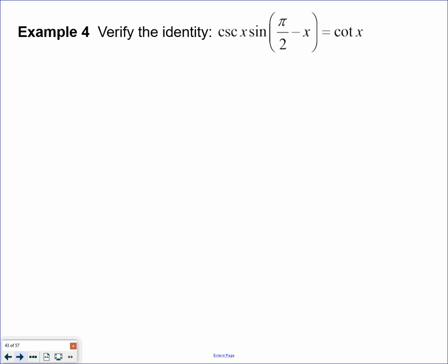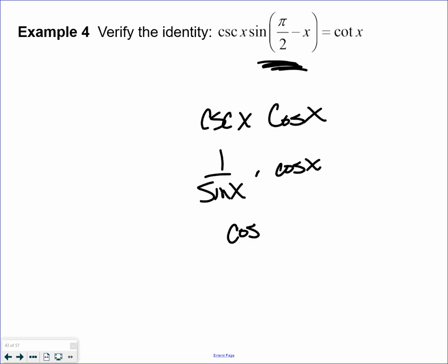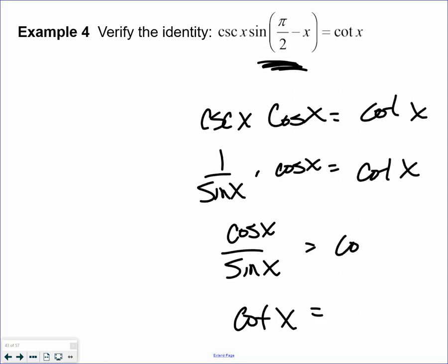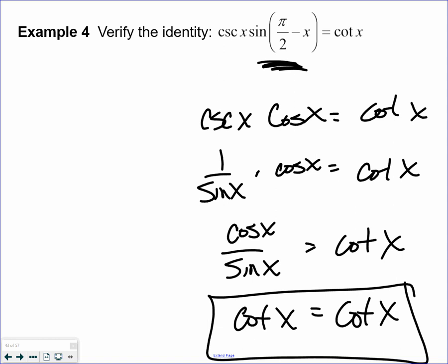I know the right-hand side is cotangent x, so I'm going to work on the left-hand side. Cosecant of 90 degrees minus x times cosecant x—this is a phase shift. A phase shift of 90 degrees is cosine x. Every time I see cosecant or secant, I change it into sine or cosine. 1 over sine times cosine would be cosine over sine. Cosine divided by sine is cotangent, using my Pythagorean identities, and I am done. I made the left-hand side equal the right-hand side.